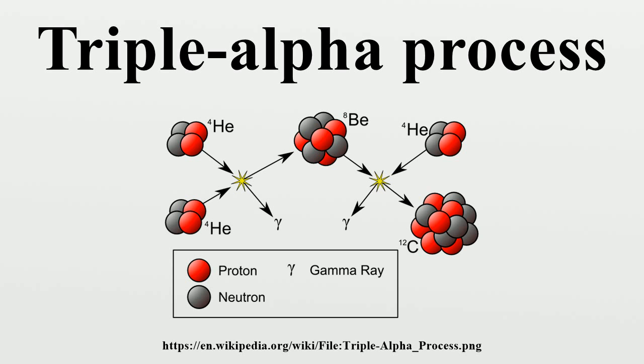The triple alpha process is highly dependent on carbon-12 and beryllium-8 having resonances with the same energy as helium-4, and before 1952, no such energy levels were known.